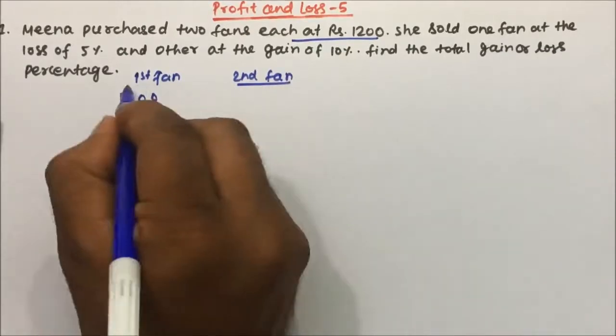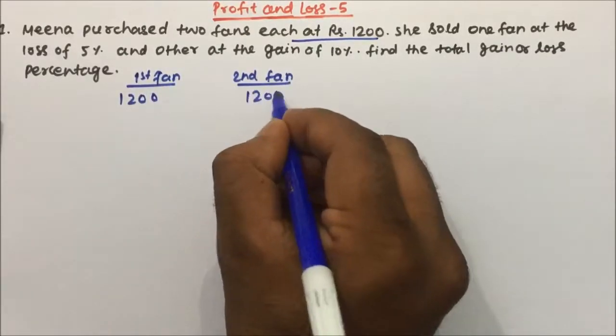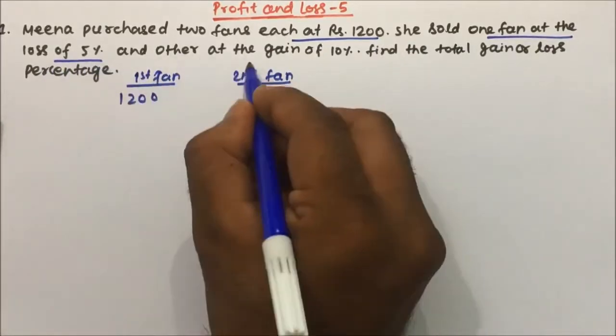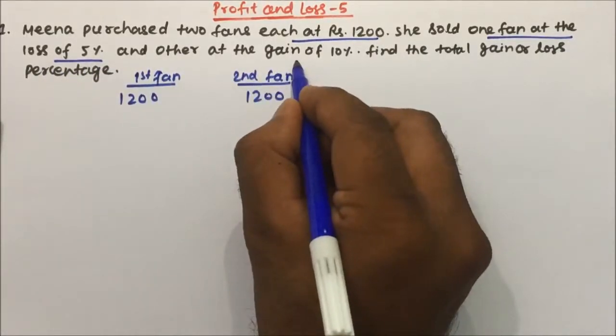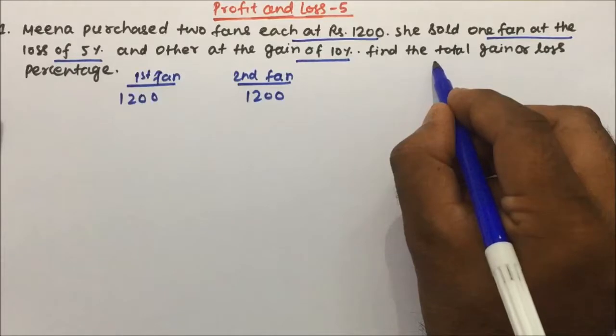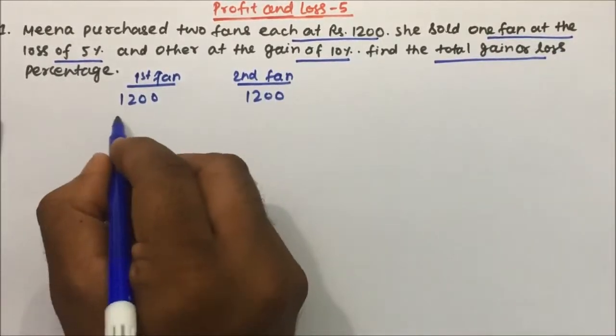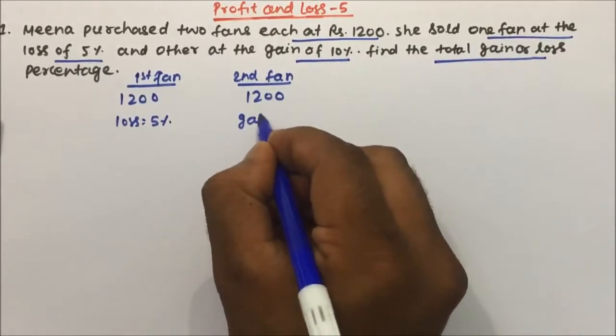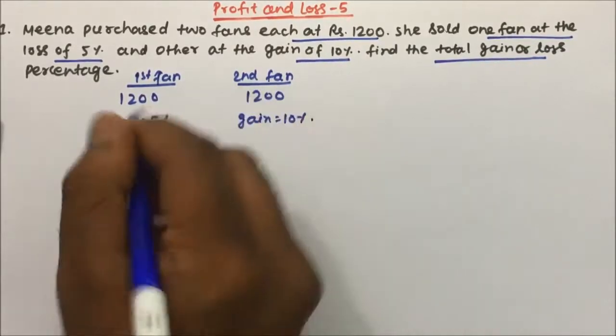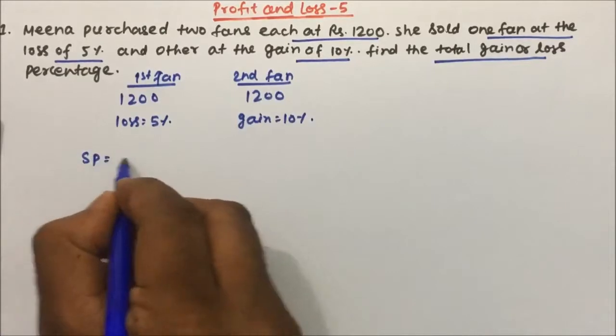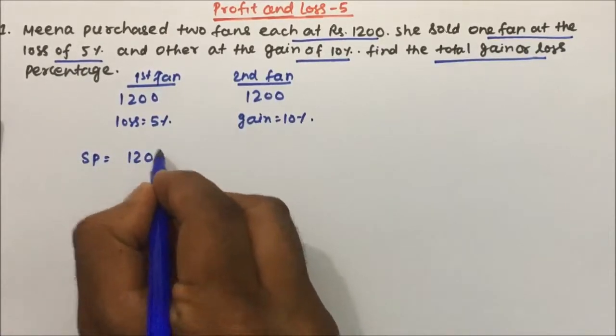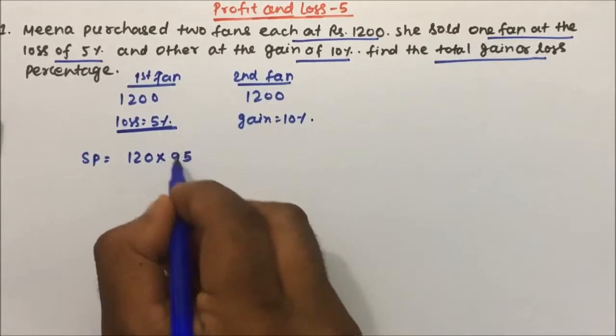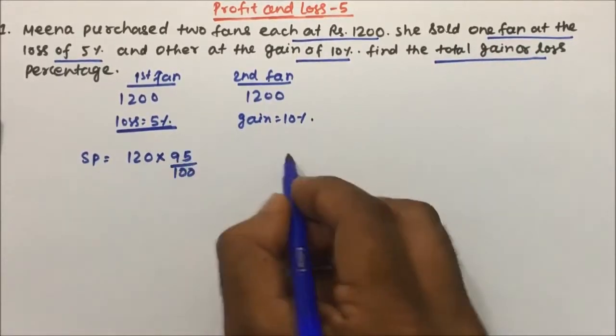Both the price is 1200 rupees. She sold one fan at the loss of 5% and another at the gain of 10%. Then find the total gain or total loss percentage. So here the loss is 5% and here the gain is 10%. What will be the selling price? Selling price will be cost price into hundred minus loss percent, so hundred minus loss will be 95 by hundred.